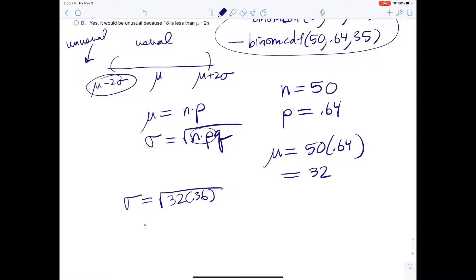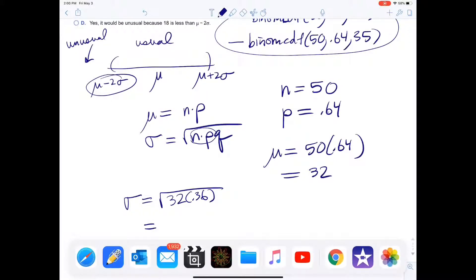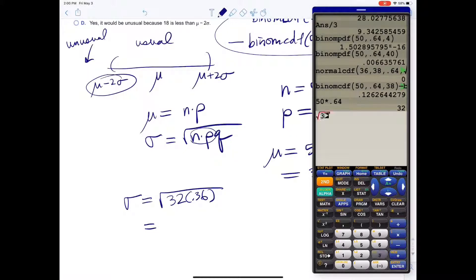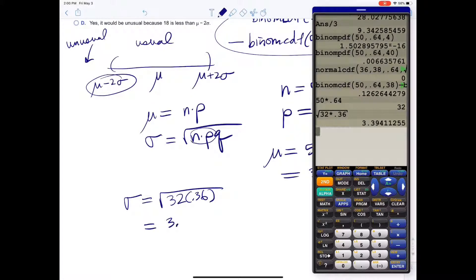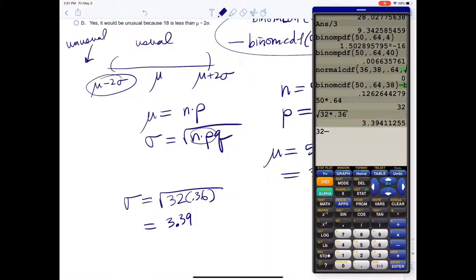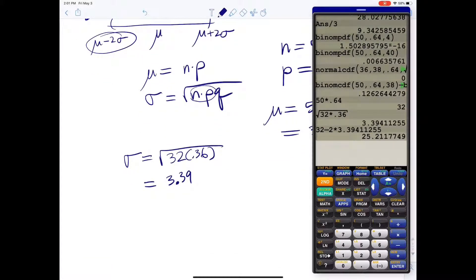What is this? The square root, 32 times 0.36, is 3.39. So we have the mean, which is 32, minus 2 times that standard deviation. Gives us a lower bound of 25.2.